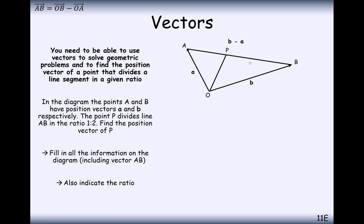To get from A to B, we go back along a and along b, so that's negative a add b. So from A to B, the vector is b minus a. Now we have to include this information about the ratio. The ratio from A to P is 1 and the ratio from P to B is 2.